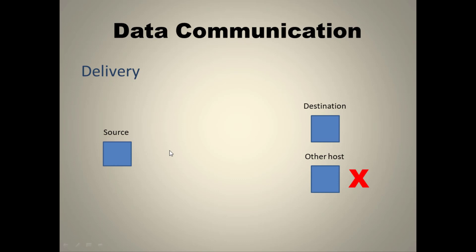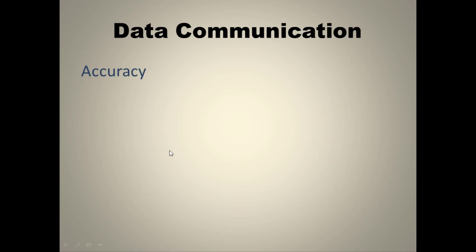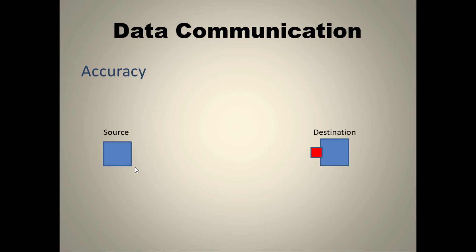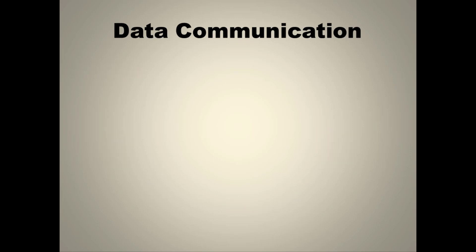The second characteristic is accuracy. If we have a source and a destination, the source has a particular message. When it is sent, it gets changed before it is delivered to the destination — the data gets corrupted. Accuracy means whatever is sent must be received properly.